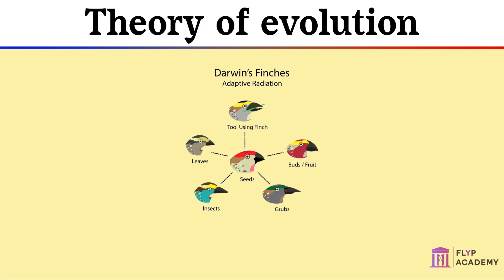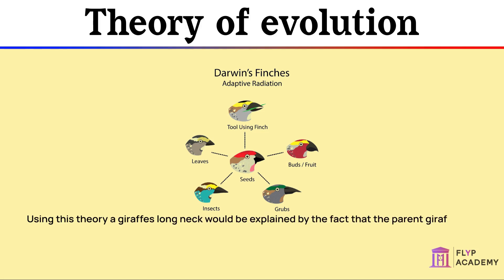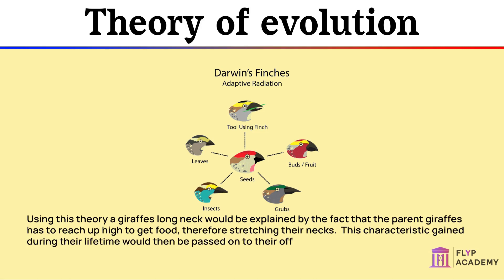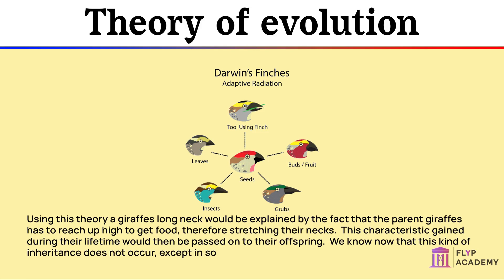A theory that opposed Darwin's was by another scientist called Jean-Baptiste Lamarck, who theorised that characteristics gained through an organism's life could be passed on to its offspring. Using this theory, a giraffe's long neck would be explained by the fact that the parent giraffes had to reach up high to get food, therefore stretching their necks. This characteristic gained during their lifetime would then be passed on to their offspring. We now know that this kind of inheritance does not occur, except in some very special and rare cases.